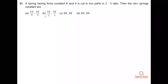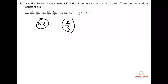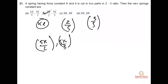A spring having force constant k is cut into 2 parts in ratio 2:3. When a spring is cut, k×l remains fixed. So if lengths are 2/5 and 3/5, the new spring constants become 5k/2 and 5k/3 respectively, so that k×l stays the same. This is also taught in NLM — cutting a spring changes its constant this way.